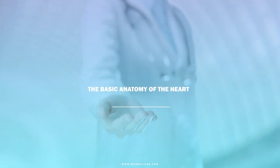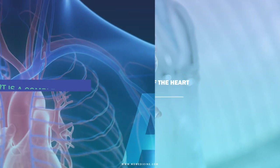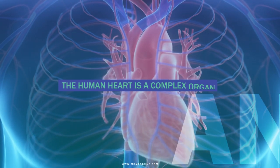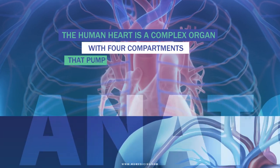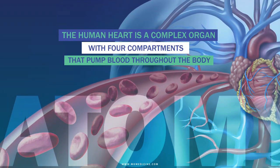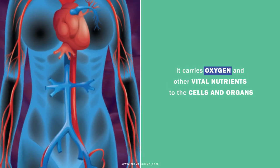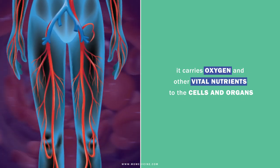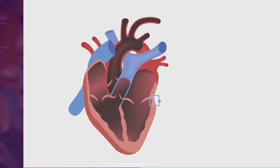The basic anatomy of the heart. The human heart is a complex organ with four compartments that pump blood throughout the body. In addition, it carries oxygen and other vital nutrients to the cells and organs.